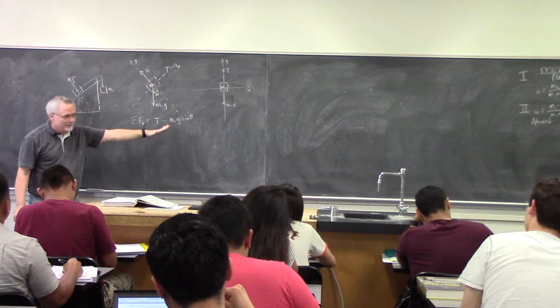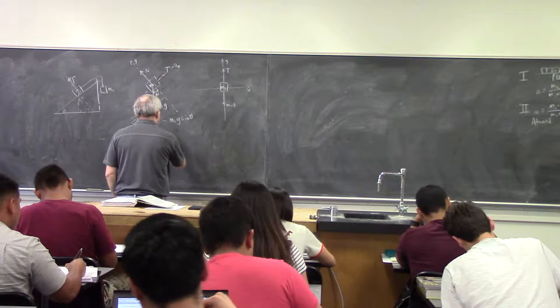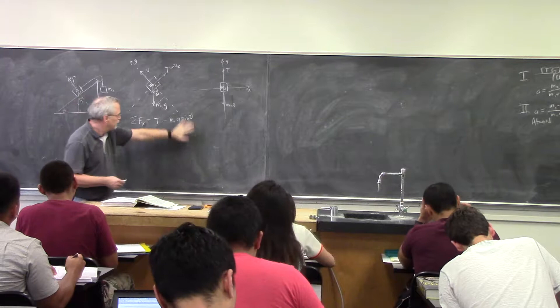When I add those all together, by Newton's second law, the sum of all the external forces equals ma. Is it positive or negative based on our choice? We said this is going to go down, so this has to go up, so it's going to be positive. So that's one of my equations right there.